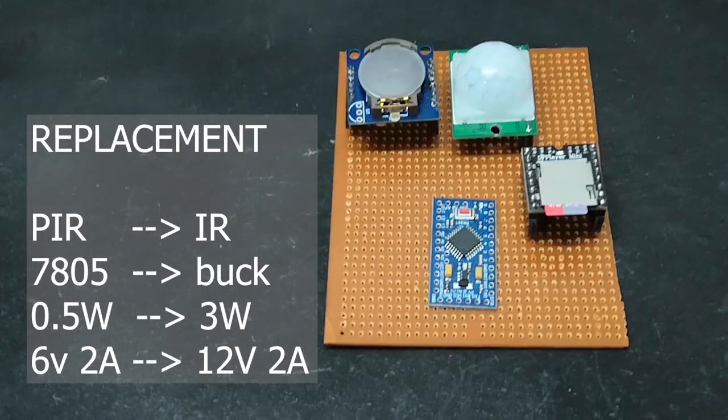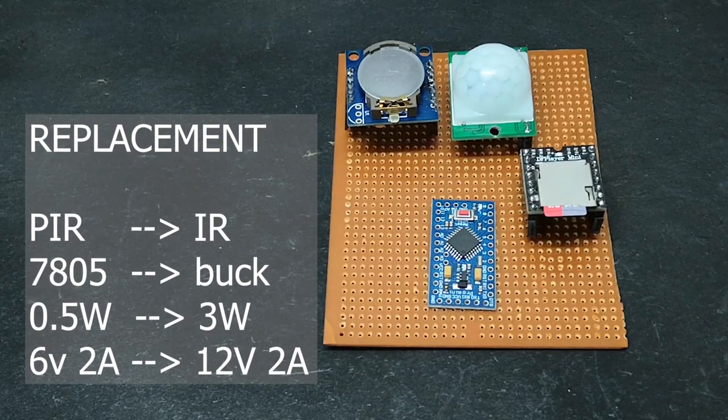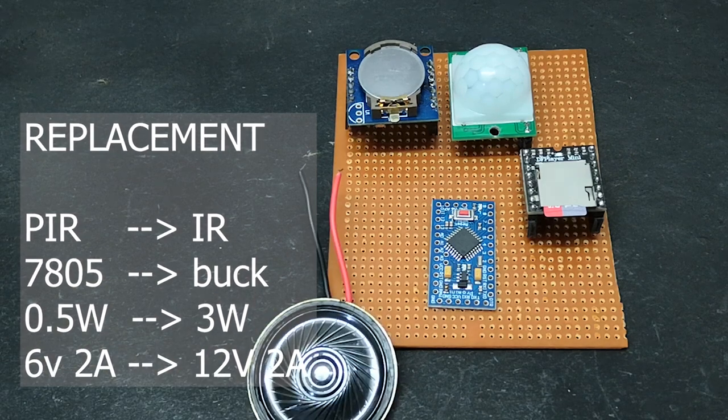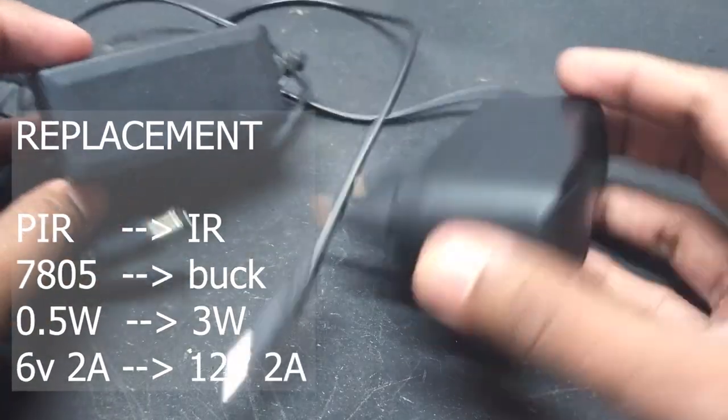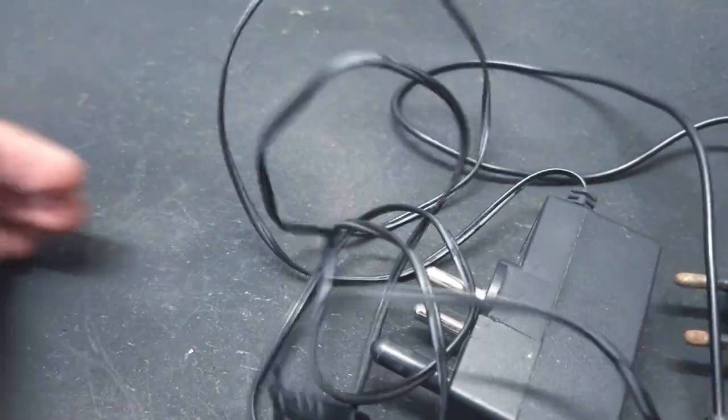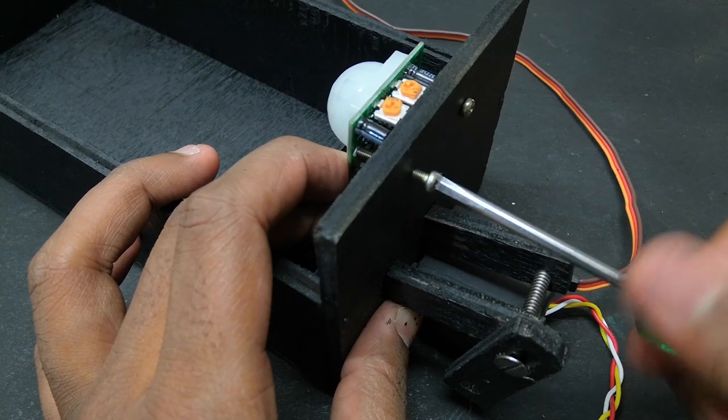Since I am such a genius, I blew up the circuit once and then destroyed the PIR sensor, voltage regulator, speaker, and finally the adapter. So I have to replace the PIR sensor with an IR sensor.